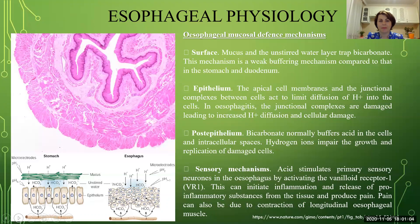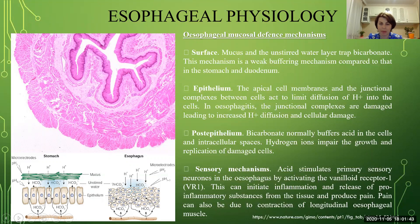The esophagus has several mucosal defense mechanisms which help prevent destruction by stomach acidity and prevent GERD in normal healthy individuals. The first defense mechanism is the surface mucous and unstirred water layers, which trap bicarbonate against stomach acid — this is a weak buffering mechanism compared to the stomach and duodenum. The second mechanism involves apical cell membranes and junction complexes between cells that limit diffusion of hydrogen ions into the cells. In GERD, these junction complexes are damaged, leading to increased hydrogen ion diffusion and cellular damage.